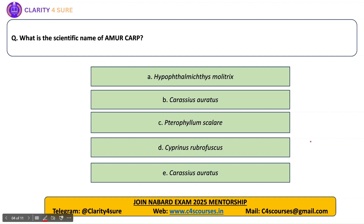Next question: what is the scientific name of Amur Carp? Generally, the scientific names of fishes are not asked, but this carp has been mentioned in the news explicitly, so this question has been included. This carp has a least environmental impact.